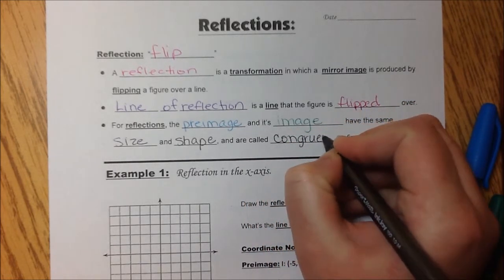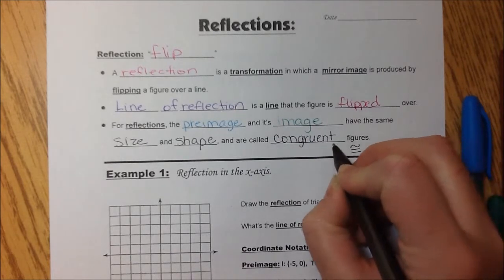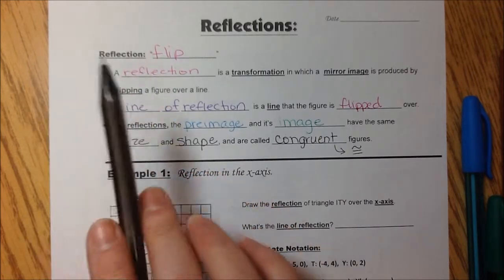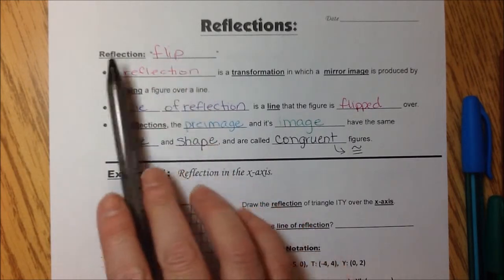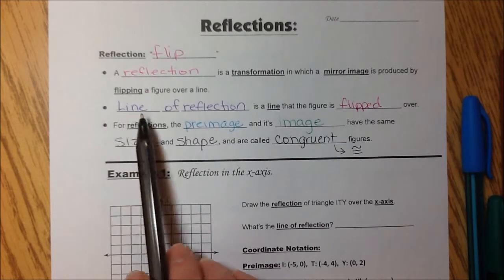And they are called congruent figures. So again, we're not changing the shape, we're not changing the size. After you move your figure, after you flip it or reflect it, it should be the exact same size, exact same shape as before.